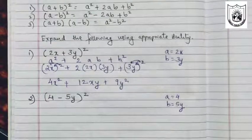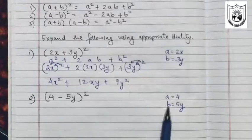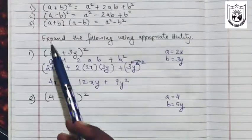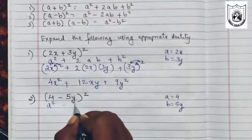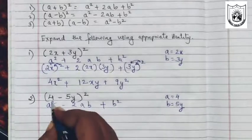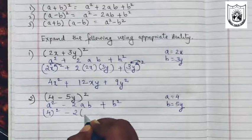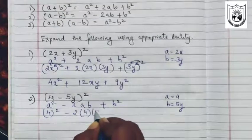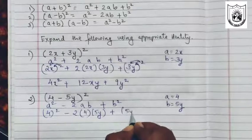Next we have 4 minus 5y the whole square. So a here is 4 and b is 5y. We are going to use the second identity because we have minus here. A square minus 2ab plus b square. So a here is 4 square. 2a is 4 and b is 5y. B is 5y the whole square.